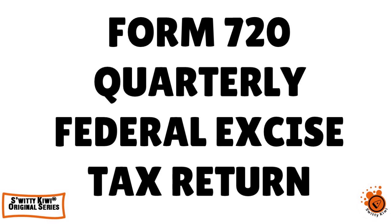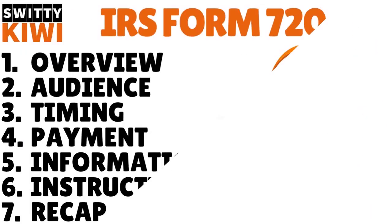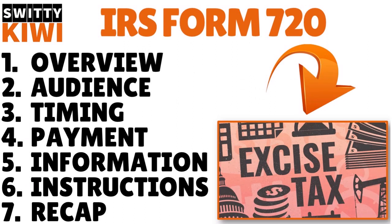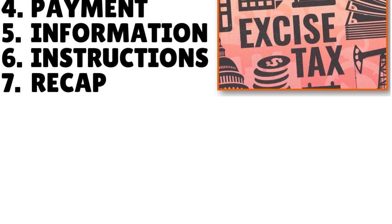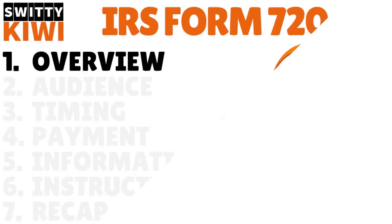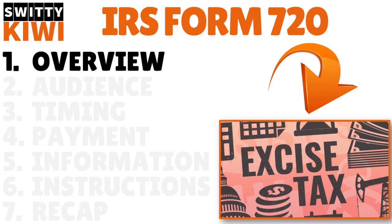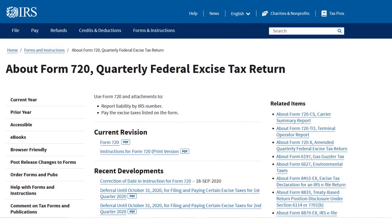In today's conversation, we want to talk about IRS Form 720 — the quarterly federal excise tax return — with line-by-line instructions. Let me first give you the overview. What is Form 720? Well, this is actually a tax form for businesses that sell goods or services subject to excise tax to report and pay those taxes.